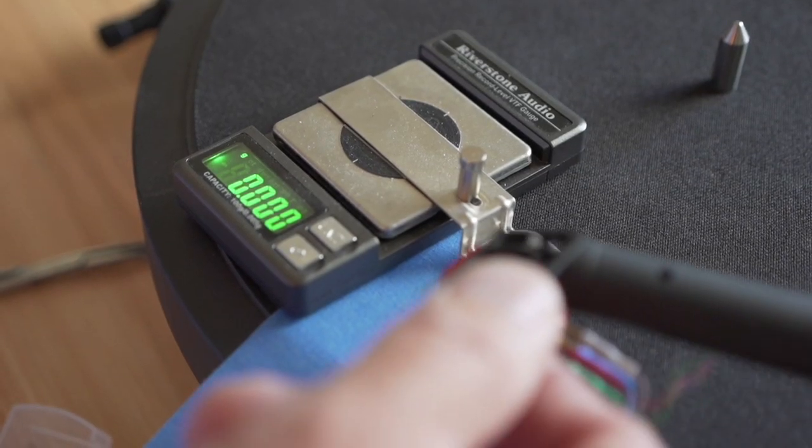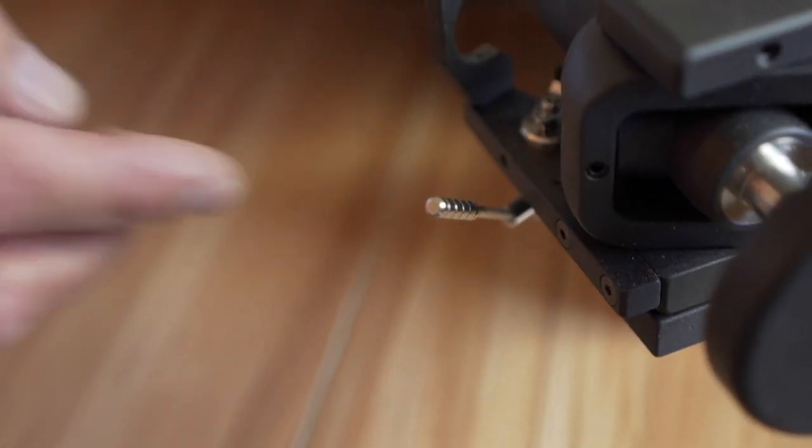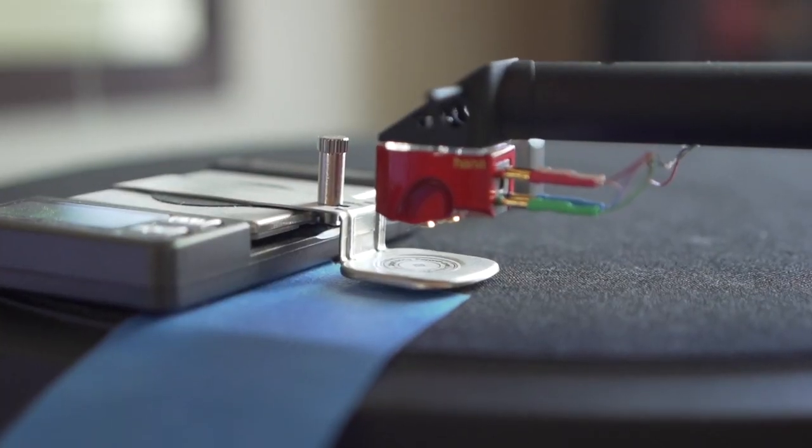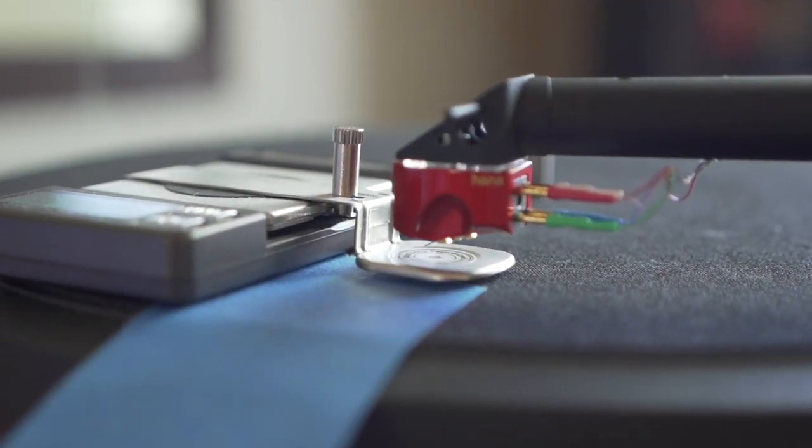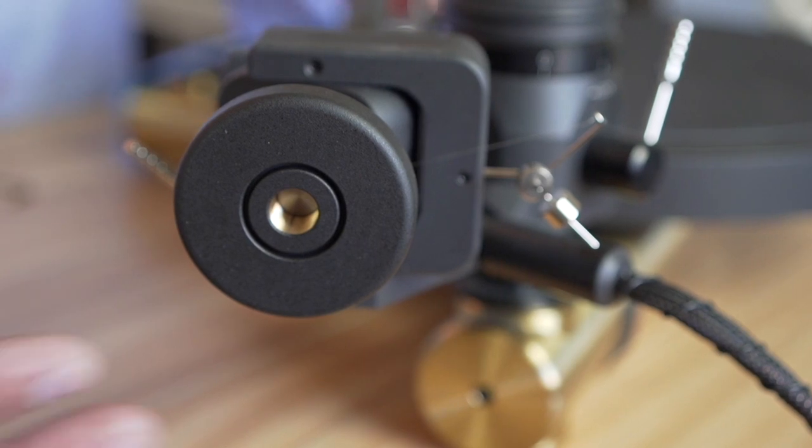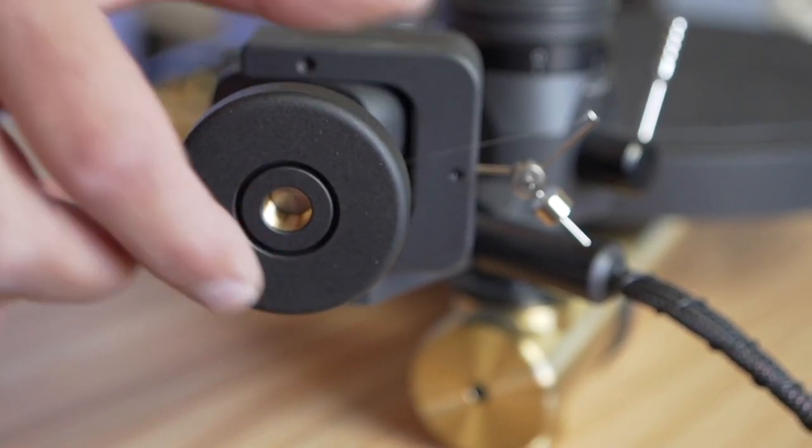So the first step we take is to mount the cartridge to the head shell. Don't worry about where it is on the head shell at this point. And set the vertical tracking force. So once you've set the vertical tracking force, the next step is to measure the height of the cartridge.